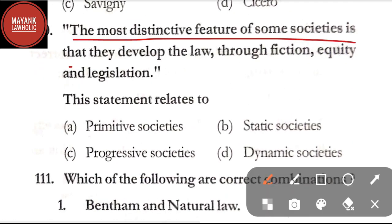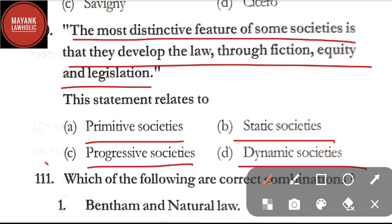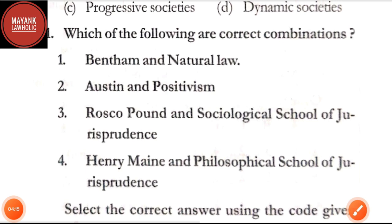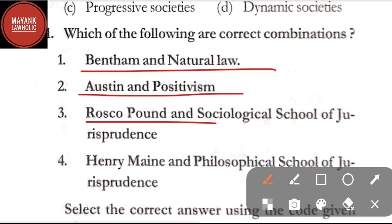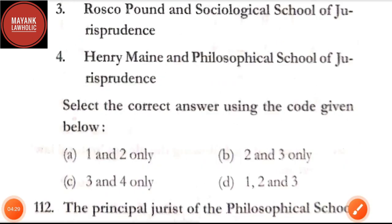Question number 110: 'The most distinctive feature of some societies is that they develop the law through fiction, equity, and legislation' — this statement relates to — primitive societies, static societies, progressive societies, or dynamic societies. The correct answer is option C, progressive societies. Question number 111: which of the following are correct combinations — Bentham and natural law; Austin and positivism; Roscoe Pound and sociological school; Henry Maine and philosophical school. The correct answer is option B, that is 2 and 3 — Austin and positivism, and Roscoe Pound and sociological school.